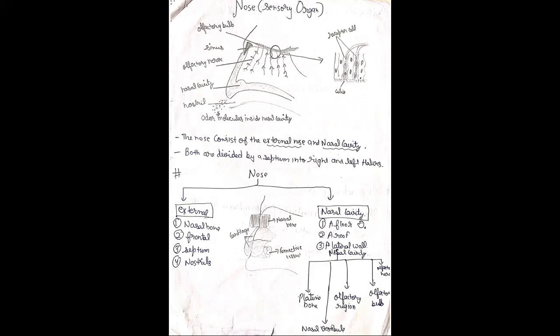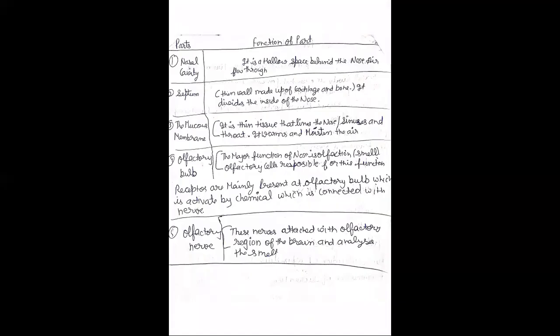Now we will discuss the function of the parts of the nose. First is the nasal cavity — it is a hollow space behind the nose through which air flows. Next is the septum — this division provides right and left nasal passages. The septum is a thin wall made up of cartilage and bone that divides the inside of the nose.